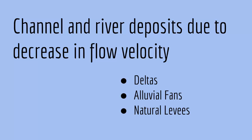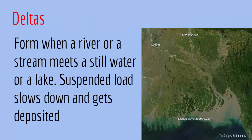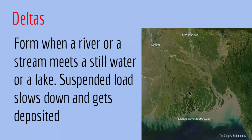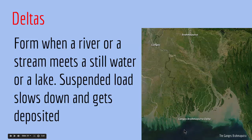So let's explore each in more detail. The first one: deltas form when a river or a stream meets a still water, a lake, an inland sea, or an ocean. Suspended load slows down and gets deposited. As you can see in the picture, we have a stream system that delivers water from the upper regions to the ocean. This stream system carries suspended sediments and when the stream meets the ocean, it deposits immediately and creates a delta. These loose brown materials are deltaic materials.